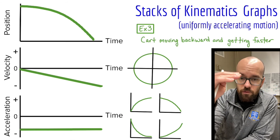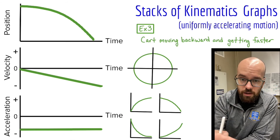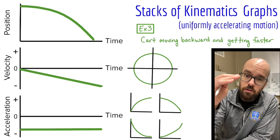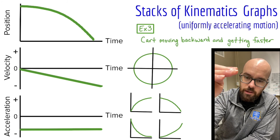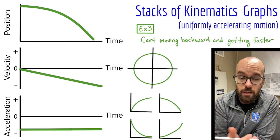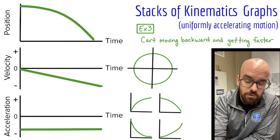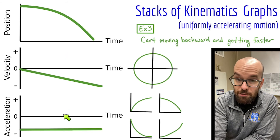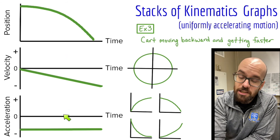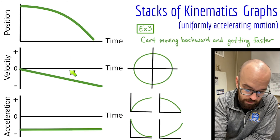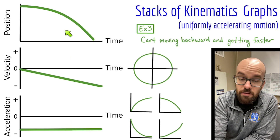The pattern continues: curved position, linear velocity, constant acceleration. Or if velocity were constant: linear position, constant velocity, zero acceleration. And if you're in calculus, going down the stack means taking the derivative each time, while going up means taking the integral — the anti-derivative — to get from acceleration to velocity to position.